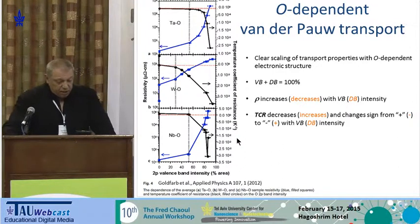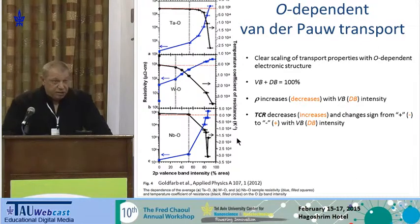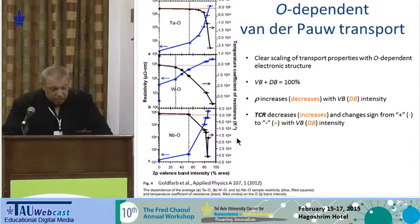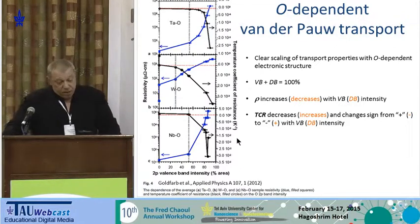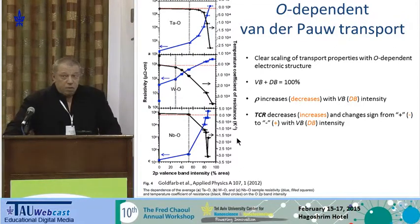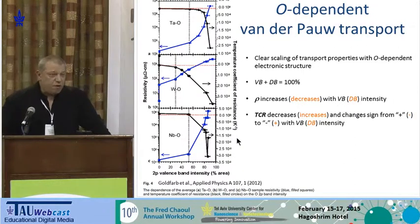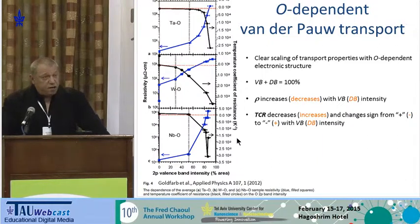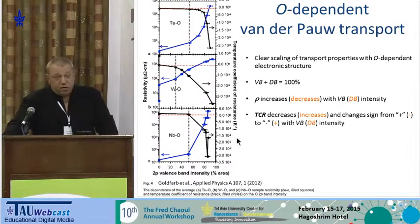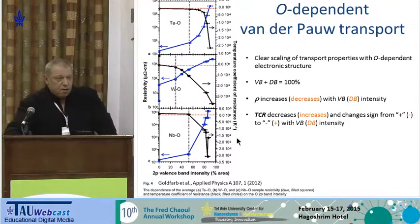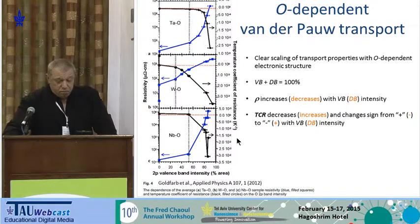As oxygen input increases and the O 2p valence band intensity rises, resistivity increases (blue line) and the temperature coefficient of resistance (TCR) decreases. In metals, TCR is positive; in semiconductors and insulators, it is negative. The red line indicates the transition from metal to semiconductor or metal to insulator.